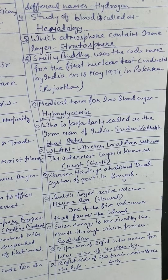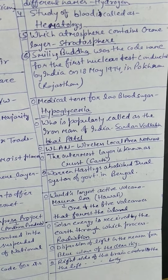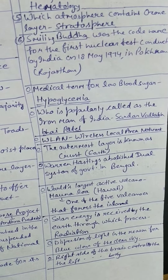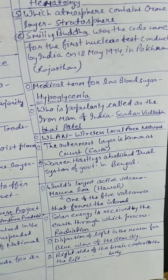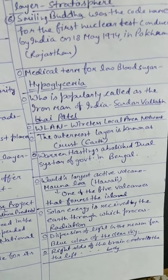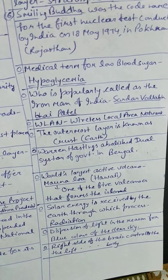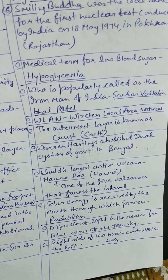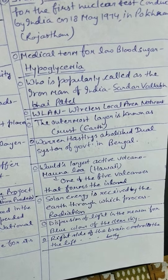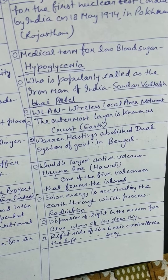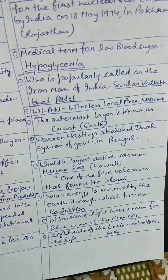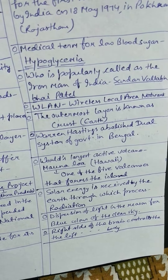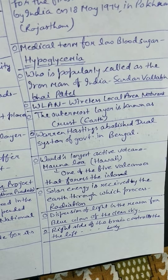Smiling Buddha was the code name for the first nuclear test conducted by India on 18th May 1974 in Pokhran, Rajasthan. The medical term for low blood sugar is hypoglycemia. Sardar Vallabhbhai Patel is popularly known as the Iron Man of India.